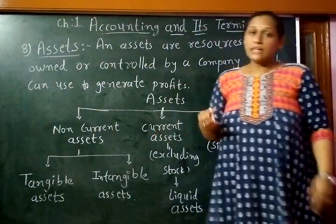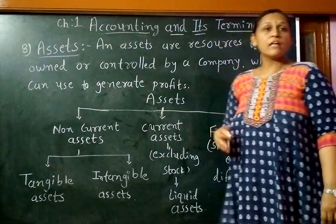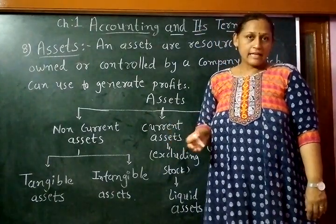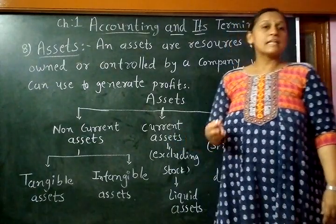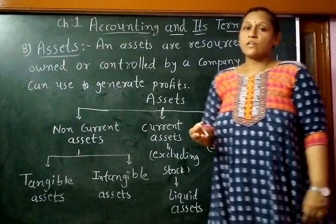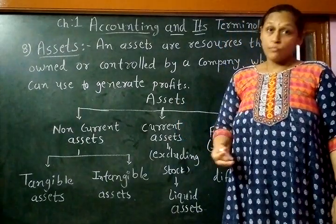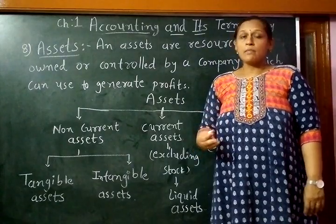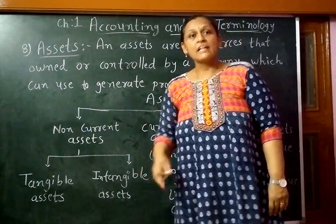To run the business smoothly, whatever we are using in the business is called an asset. Examples of assets are land and building, furniture, vehicle, computer, copyright, trademark, etc.